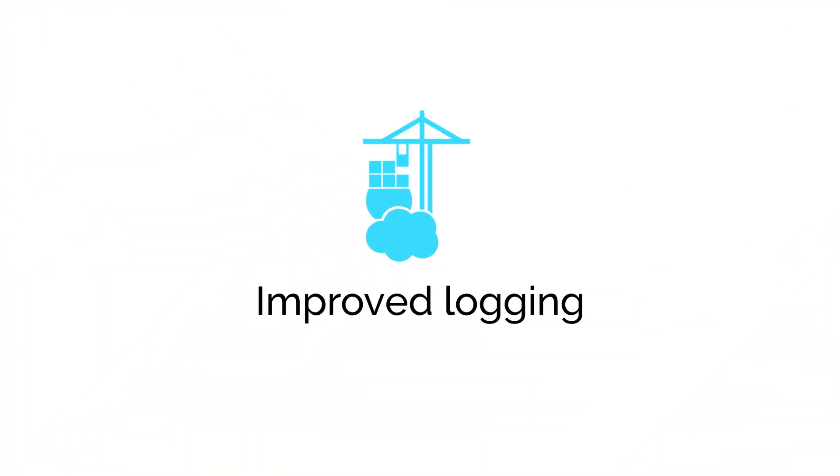We've also made significant changes in how we log within Portainer, in particular for OAuth authentication and for Edge devices. OAuth logs now have increased verbosity which should help with diagnosing issues with authentication timeouts. Edge API calls now give more information when they error, including the environment ID and name, which helps when dealing with lots of Edge environments.